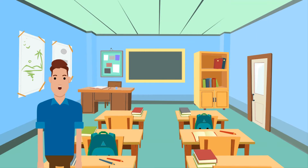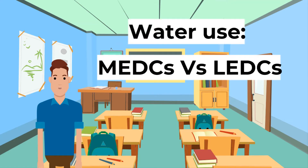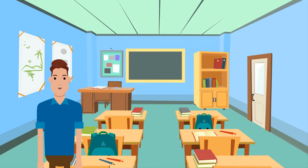First, let's look at the global demand for water. The amount of water used in the world every day is very uneven. More economically developed countries use more water than less economically developed countries. Households, farming, and industry all demand water. What the water is used for depends on the country.